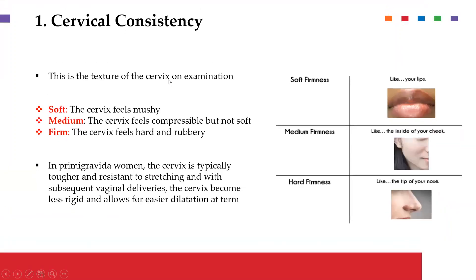Cervical consistency refers to basically the texture of the cervix, and it is likened to whether it is soft, medium, or hard. A soft cervix consistency is likened to touching the lips, medium firmness is likened to touching the cheek, and hard firmness is likened to touching the nose. A softer cervix shows that it is more likely to have a good outcome if induction happens, compared to a firm one.